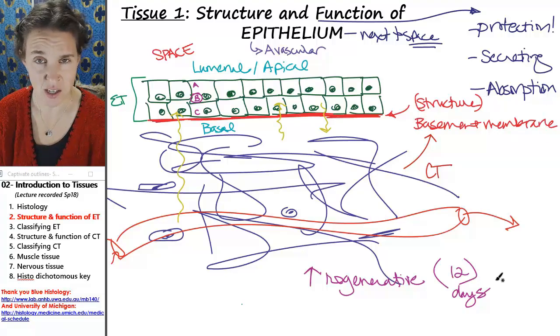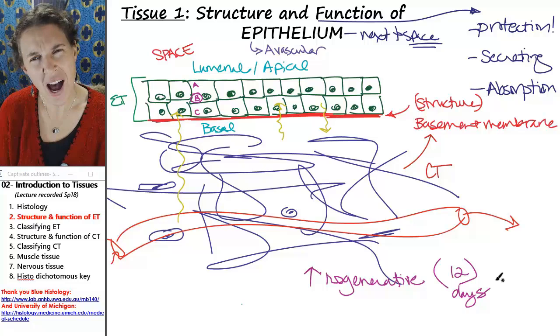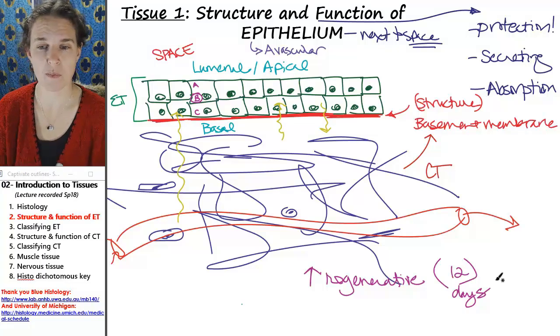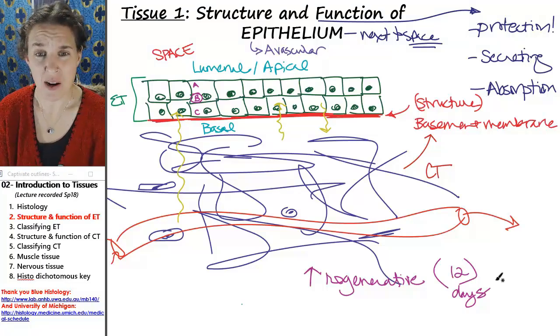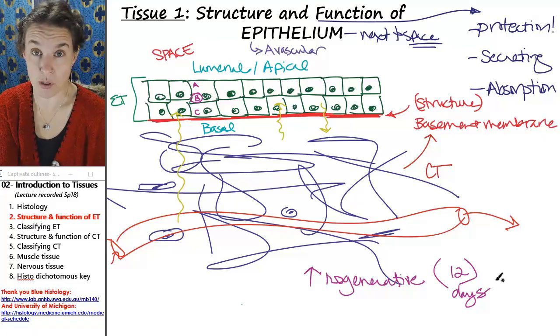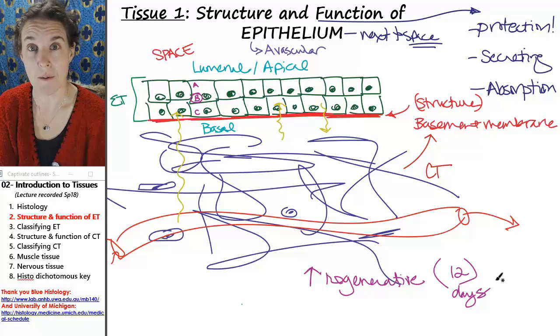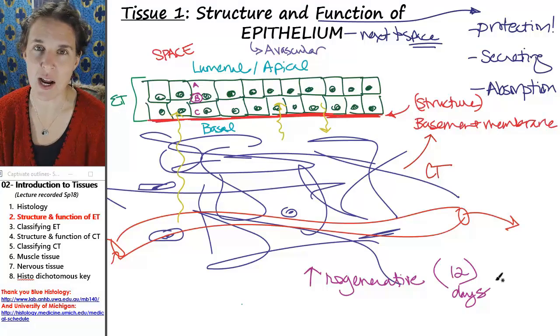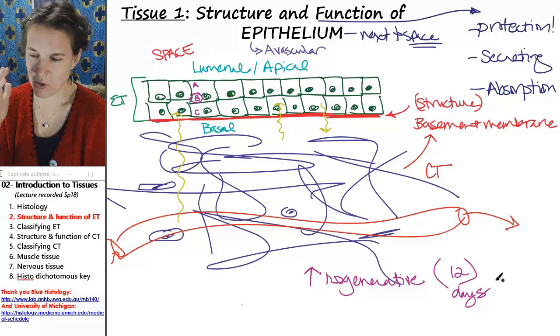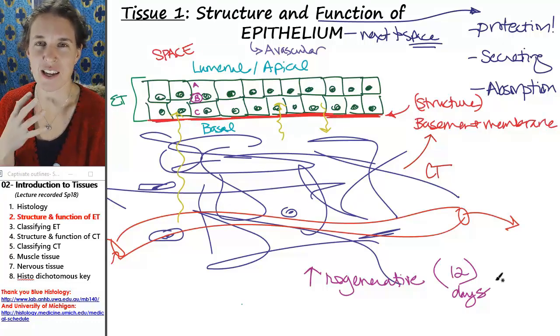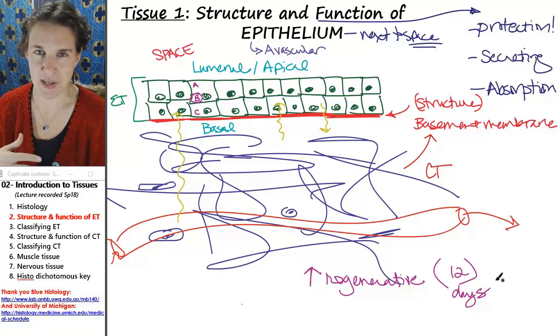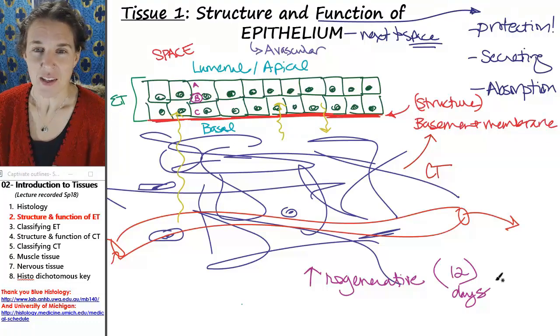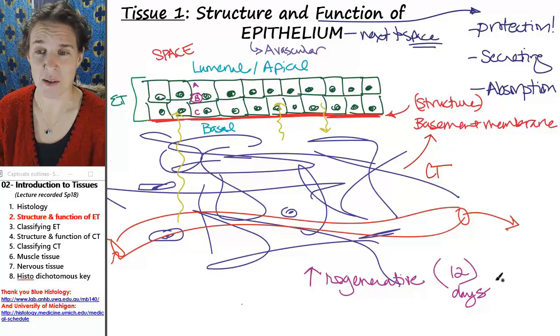And why? Why would epithelium be so quick to replace itself? Well, think about it. You're lining a space. You are basically the border to the outside constantly and stuff is constantly having to cross or slough by you. If you think about your digestive tract, food, bacteria, crazy like fibers, whatever, acids and enzymes, your cells are taking a beating in the digestive tract. And so they got to heal themselves. They got to handle that.